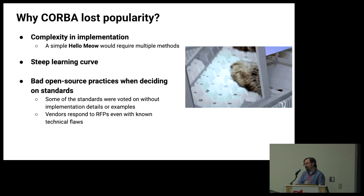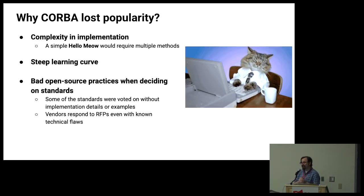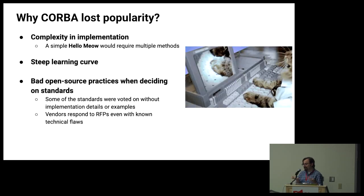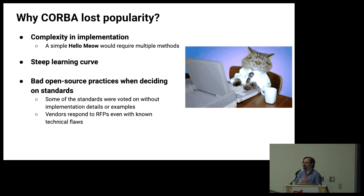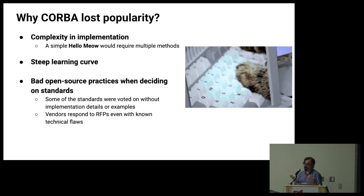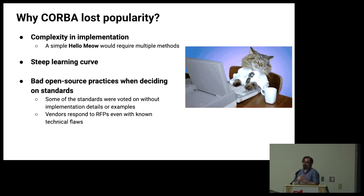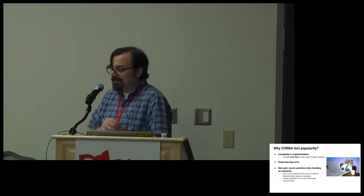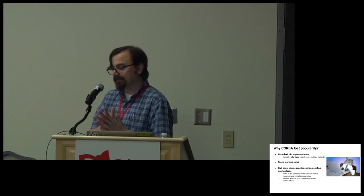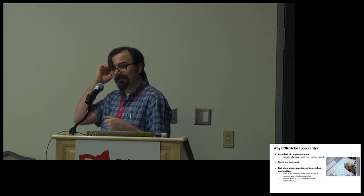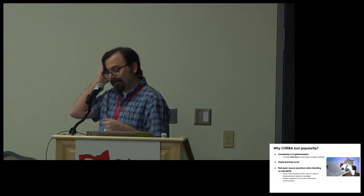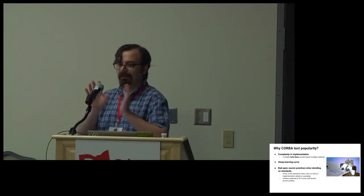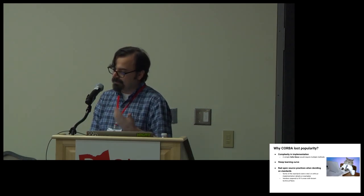CORBA lost popularity over time. One reason was the complexity of implementation — a Hello World would require multiple methods, configurations, or setups. It had a steep learning curve; not everyone could just pick it up and start working on it. Sadly, it had some bad open source practices when deciding on standards. Some standards were voted on without implementation details or examples, and vendors responded to RFPs even with known technical flaws, then continued supporting those flaws going forward.